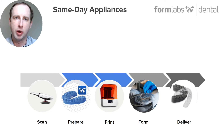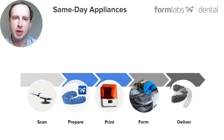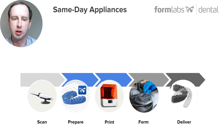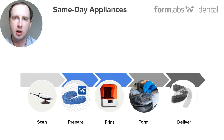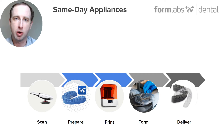Going a little bit deeper with the potentials that Scan to Model hopefully will unlock with same-day appliances — here are the major steps of a thermoformed appliance workflow, say like a clear retainer. You take the digital impression, you bring those STL files into PreForm, build it with Scan to Model, print and post-process, then thermoform over those models, cut out, finish, and then you're ready to deliver the appliance.